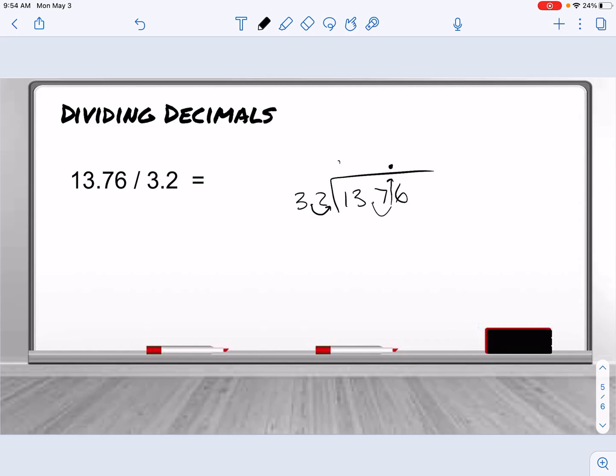So 32 doesn't go into 1, doesn't go into 13, goes into 37 four times. 4 times 32 is 128. So we have to subtract.